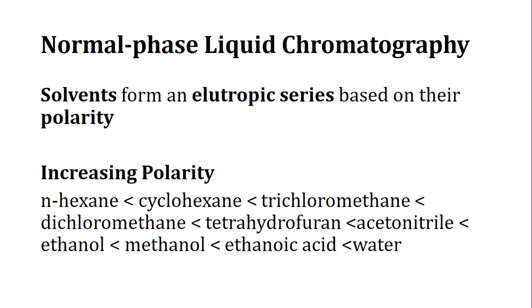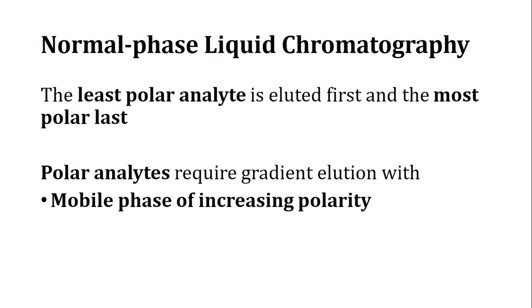In the eluotropic series, n-hexane or cyclohexane are among the least polar, while acetic acid and water are the higher polarity components. If we have analytes numbered 1 to 5 in order of increasing polarity, the least polar analyte (number 1) will be eluted first.